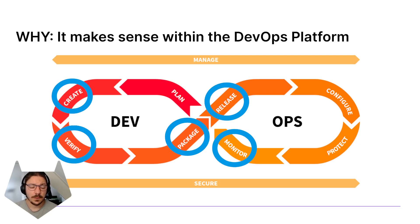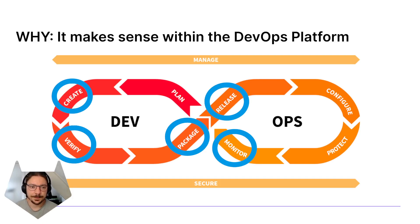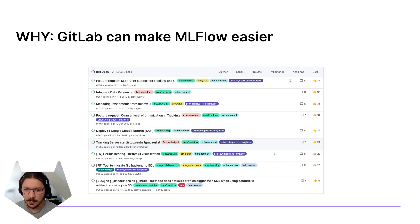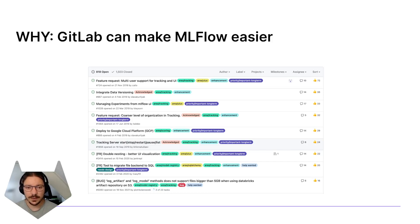Second, it makes sense with the DevOps platform. MLflow and the model registry — create, verify, package, release, monitor — it really involves a lot of DevOps in itself, so it makes sense to be part of the DevOps platform. And third, GitLab can actually make MLflow easier. If you go through the open issues on MLflow, you're going to see that a lot of the things I mentioned — GitLab can help with. The biggest pain point, the most voted issue that comes up every time I speak to a user about MLflow, is authentication, permissions, and user support. MLflow doesn't do any of it, and GitLab could provide this through GitLab's own permission system.